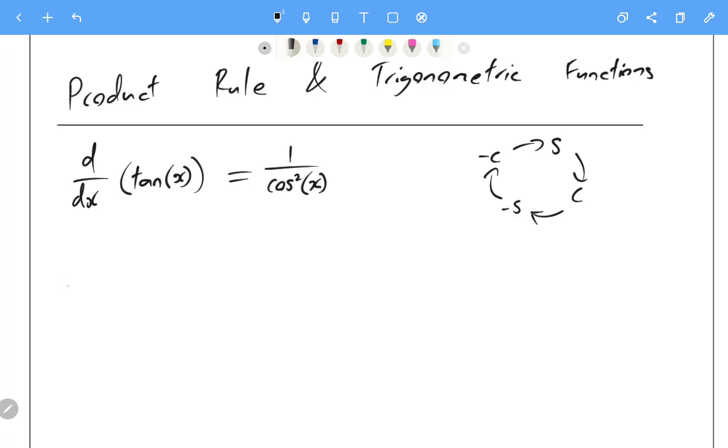Alrighty, so let's have a look at a few examples. Let's imagine our function is y equals x squared cos of x. Well, we might recognize that this is two functions being multiplied together, which means we are going to need to use the product rule.